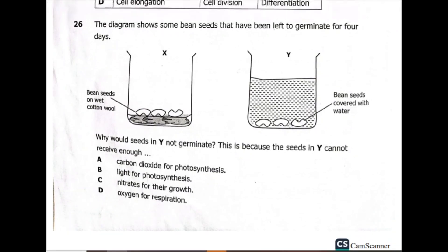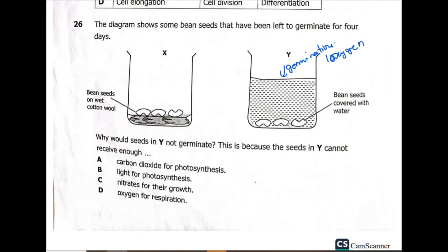Now we move on to question 26. The diagram shows bean seeds left to germinate for four days. In X, bean seeds are on wet cotton wool. In Y, bean seeds are covered with water — these seeds will not germinate because too much water causes dormancy and there will be a lack of oxygen. Oxygen is a necessity for germination. Why would seeds in Y not germinate? Because the seeds in Y cannot receive enough oxygen for respiration.